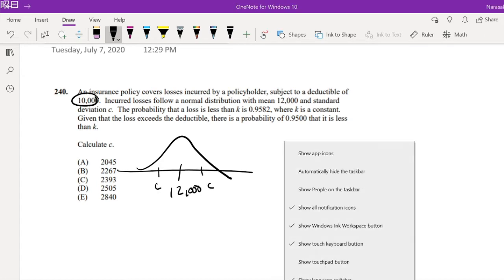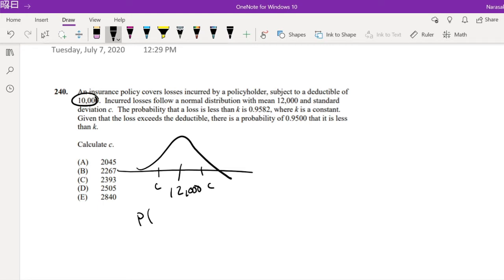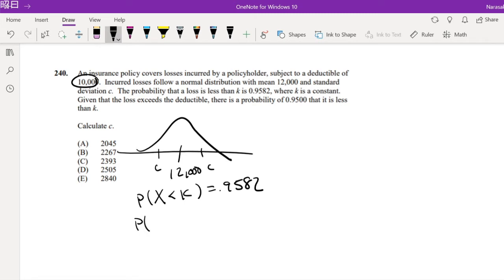The probability that loss X is less than K is equal to 0.9582, where K is a constant. And given that loss exceeds our deductible, which is $10,000 right here, there is a probability of 0.9500 that it is less than K. And then we're trying to find c.